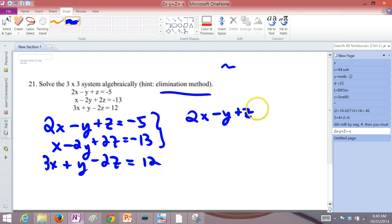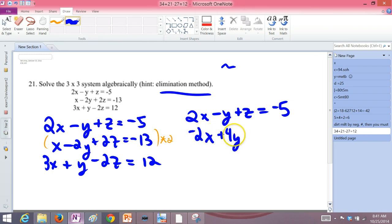Be careful with the copy down part here. Take the second equation and multiply it by negative 2. So doing that gives us negative 2x, positive 4y, negative 4z, positive 26.